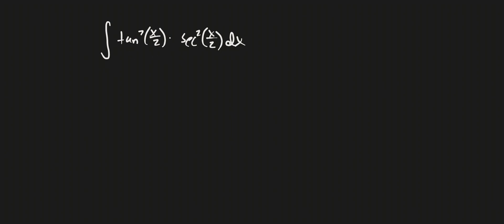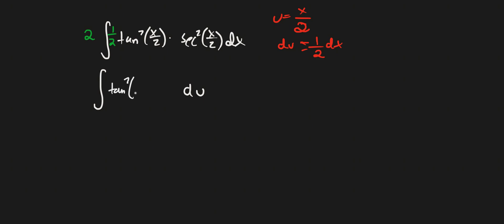What I'll do is set u equal to x/2, so du is equal to (1/2)dx. I can multiply 2 outside and (1/2) inside and these will cancel. So this becomes the integral of tangent to the 7th power u times secant squared u times 2 du.